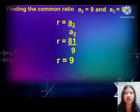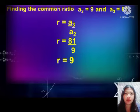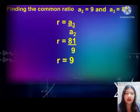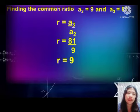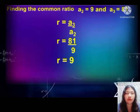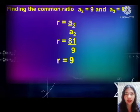In a geometric sequence, since we have the third term and the second term, we divide to find the common ratio. So r equals a sub 3 divided by a sub 2. The value of a sub 3 is 81 and the value of a sub 2 is 9, so r equals 81 divided by 9. Therefore the common ratio is 9.